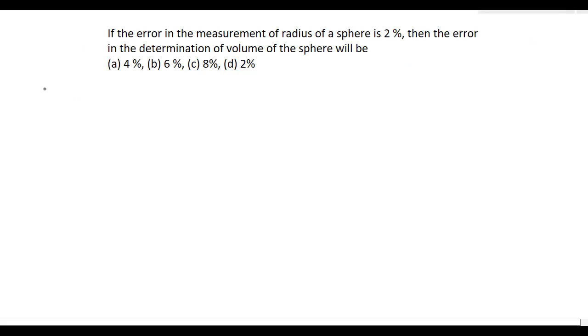Now, we know that the volume of a sphere V is equal to 4 by 3 pi r cube. Here, r is the radius of the sphere and V is the volume.